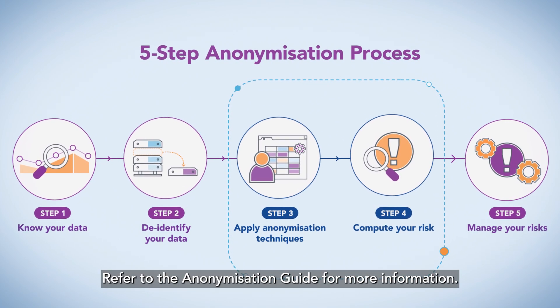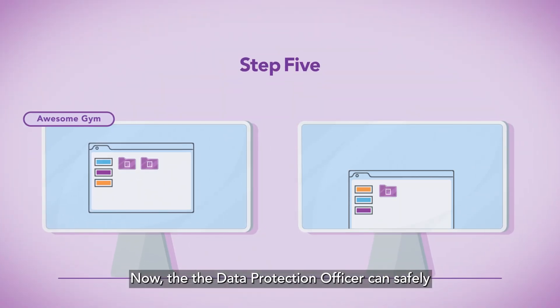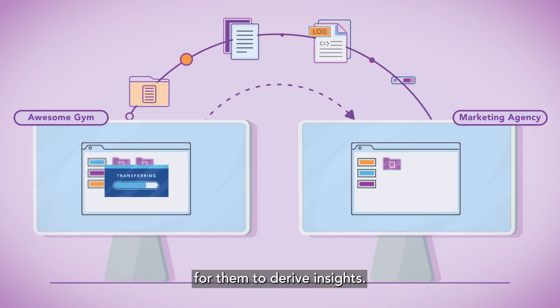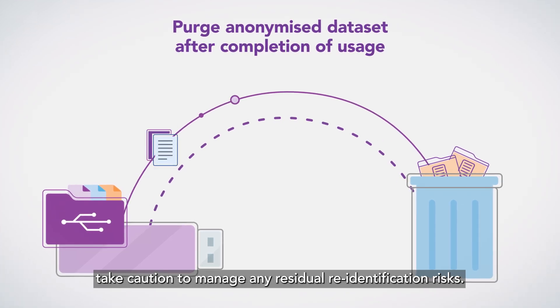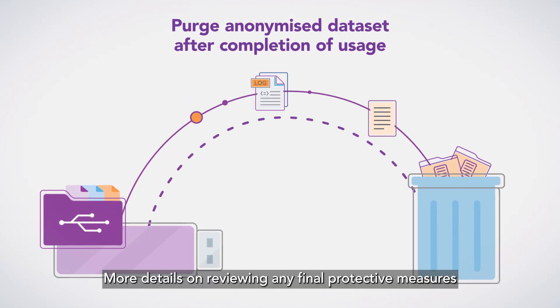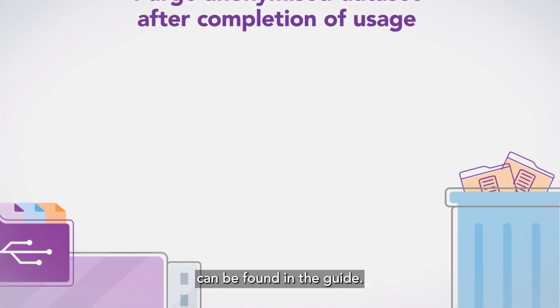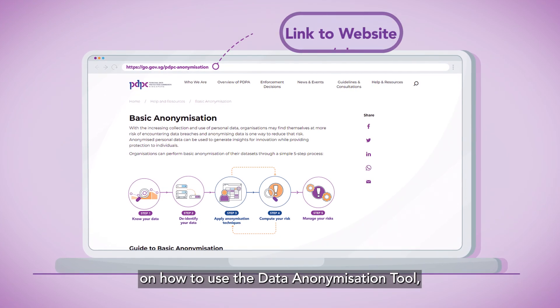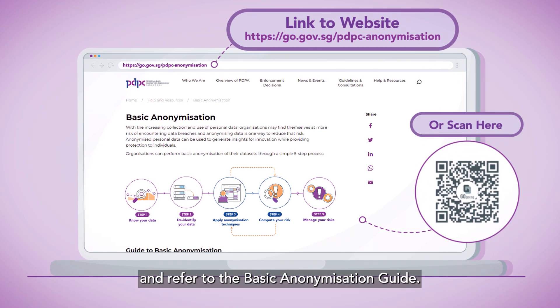Refer to the Anonymization Guide for more information. Now, the Data Protection Officer can safely share the anonymized data with the marketing agency for them to derive insights. Once you've finished using the anonymized data, take caution to manage any residual re-identification risks. More details on reviewing any final protective measures can be found in the guide. For more information on how to use the Data Anonymization Tool, head over to the PDPC website and refer to the Basic Anonymization Guide.